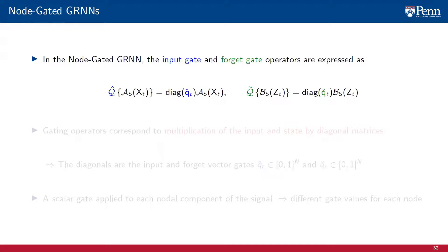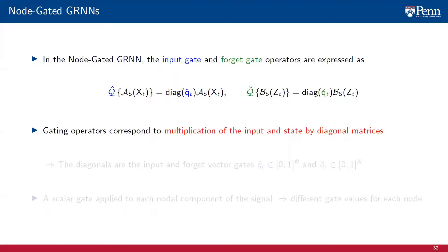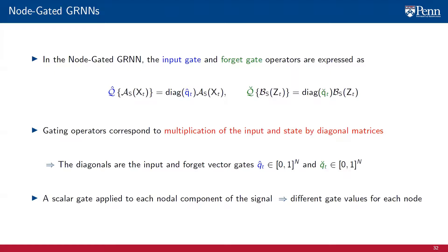We now formally define node gated GRNNs. In the node gated GRNN, the input gate operator q-hat(t) is parameterized by a vector q-hat(t), and the forget gate operator q-check(t) is parameterized by a vector q-check(t). These correspond to multiplications of the filtered input and filtered state by diagonal matrices, where the diagonals are the input gate vector q-hat(t) and the forget gate vector q-check(t). Each component of these vectors takes values in the 0-1 interval, so a different scalar gate is applied to each nodal component of the signal.